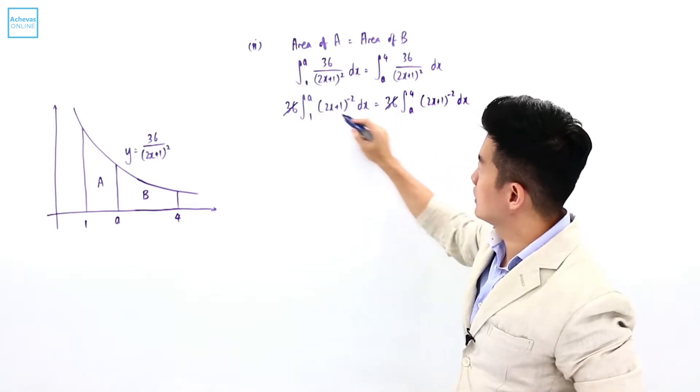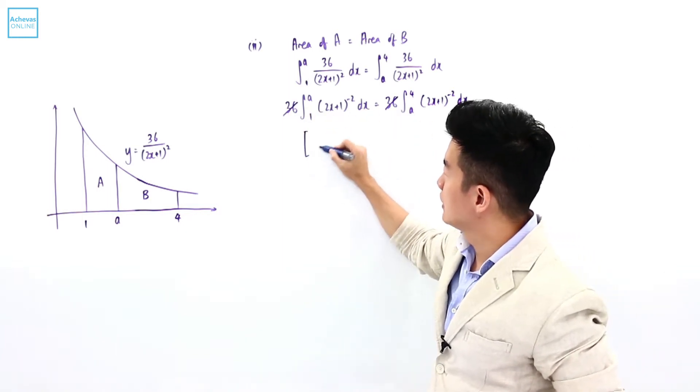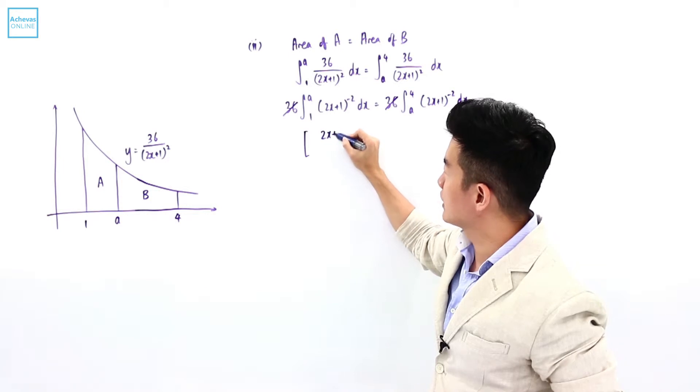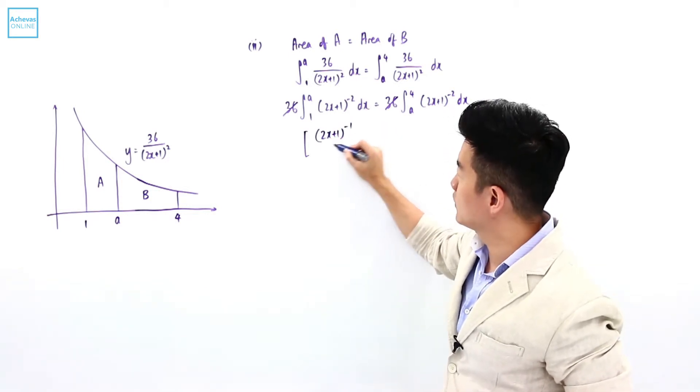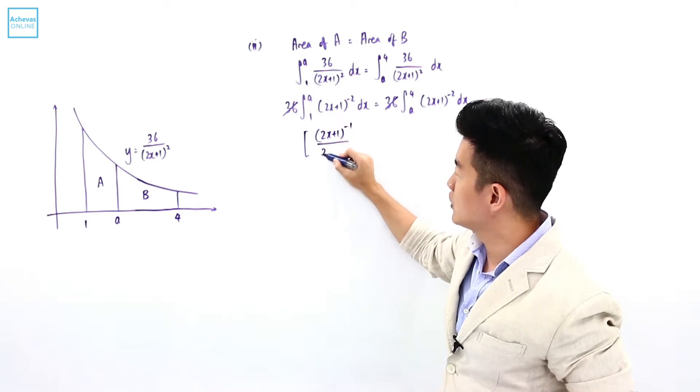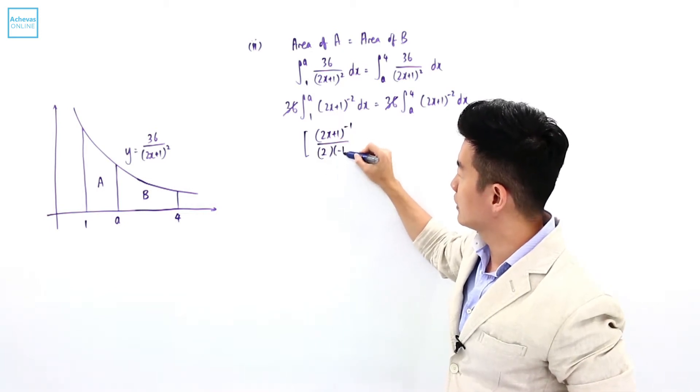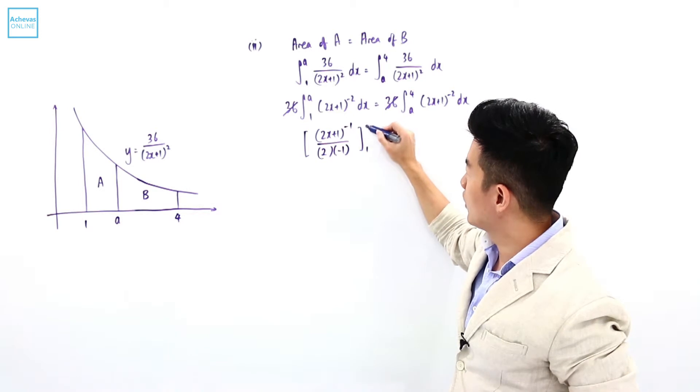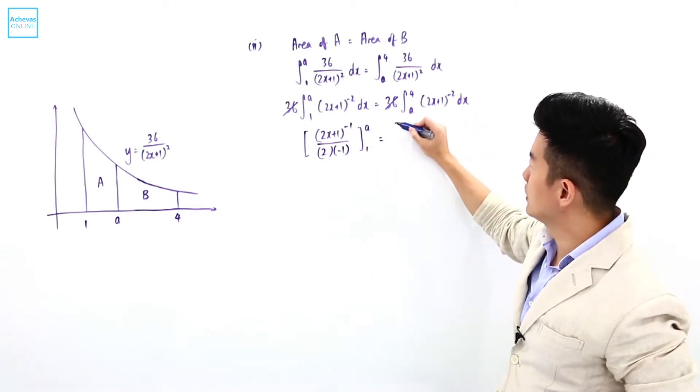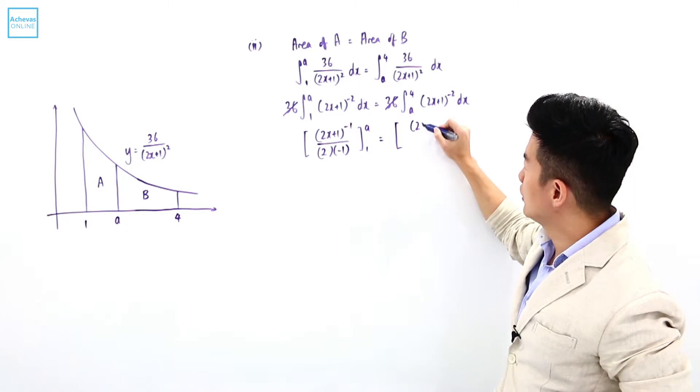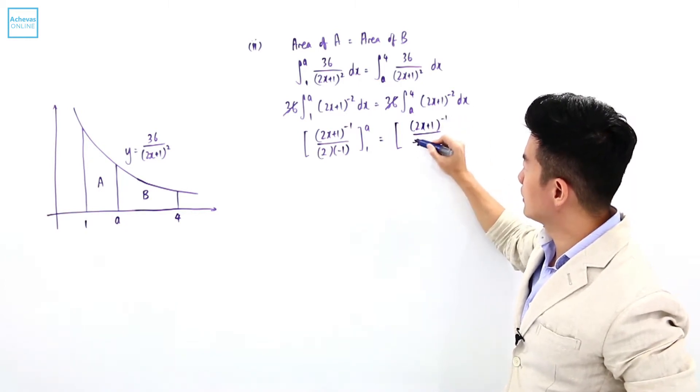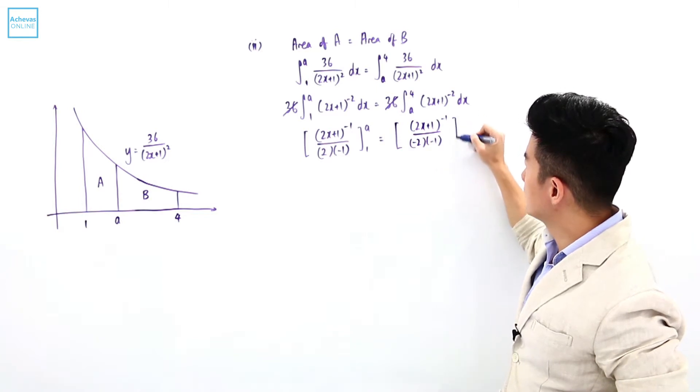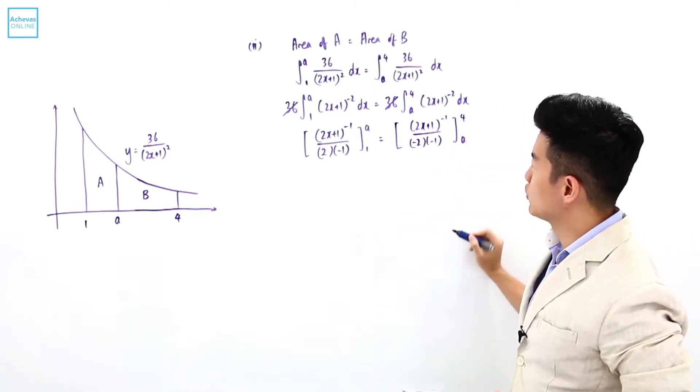36 can be cancelled. Integration of this gives (2x + 1)^(-2+1) divided by the coefficient of x, which is 2, and by -1. From 1 to A, this equals the integration of (2x + 1)^(-1) divided by 2(-1), from A to 4.